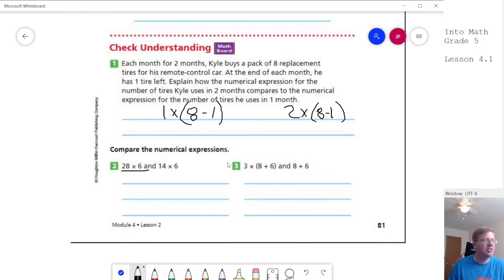Going on to this one, we have 8 plus 6, and then we have three groups of 8 plus 6. So the left-hand side is three times larger than the right-hand side.